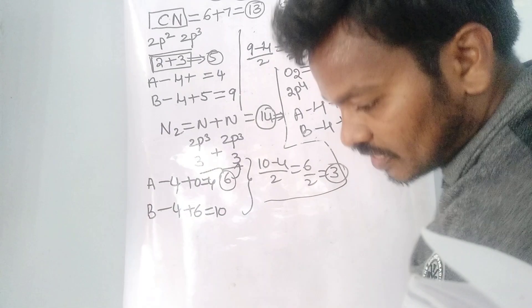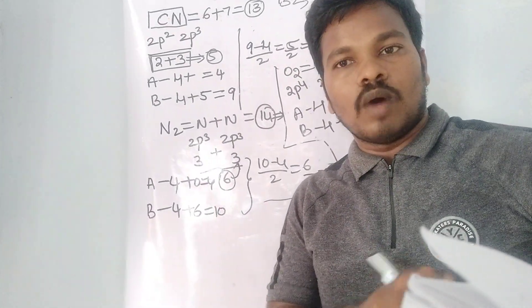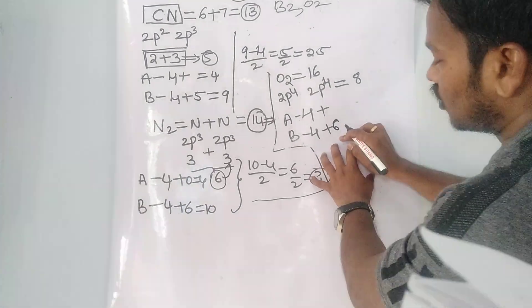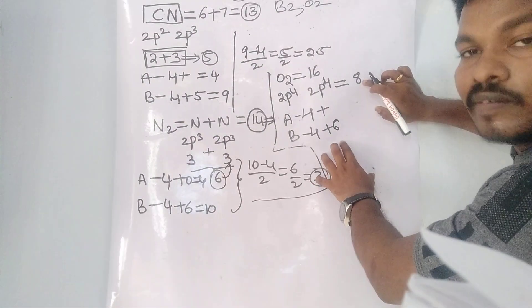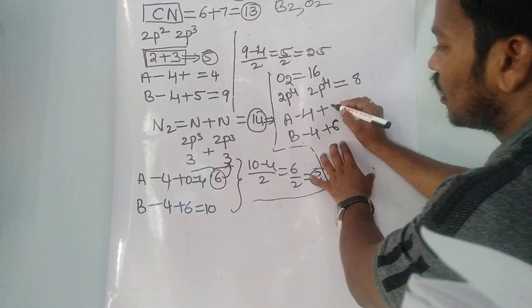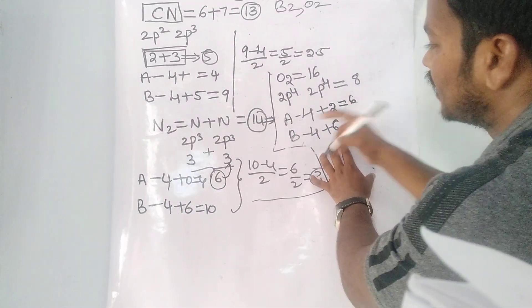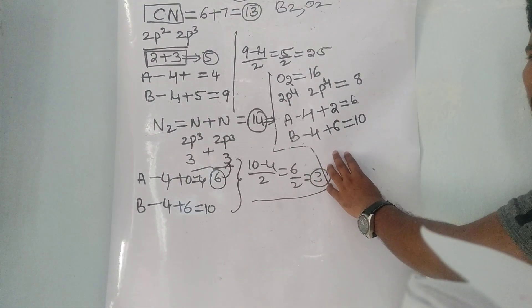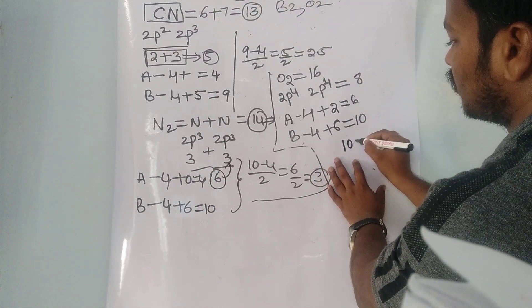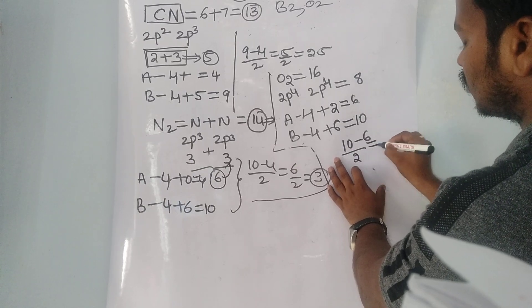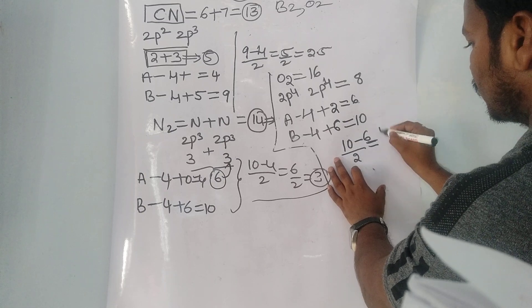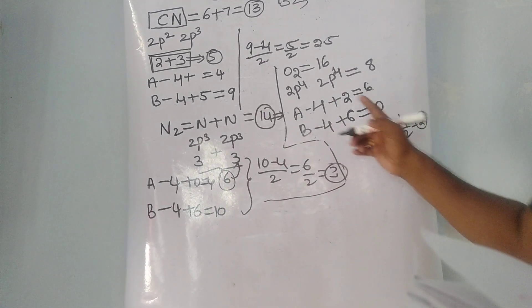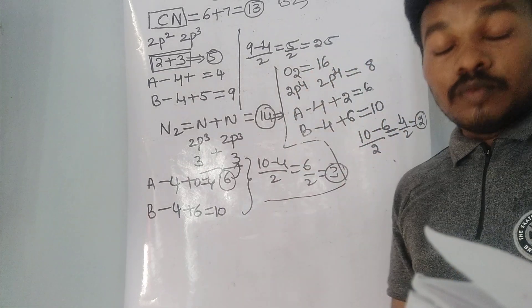When the p-electron count is more than 6 — whether it is 8, 9, 10, 11, or 12 — take 6 electrons and add them to bonding. The remaining electrons go to anti-bonding. Here, out of 8, take 6 for bonding: bonding = 4 + 6 = 10. Remaining = 8 − 6 = 2, so anti-bonding = 4 + 2 = 6. Bond order = (10 − 6) / 2 = 4 / 2 = 2. Even though the electron count is even, because it has 16 electrons it is paramagnetic — an exception.